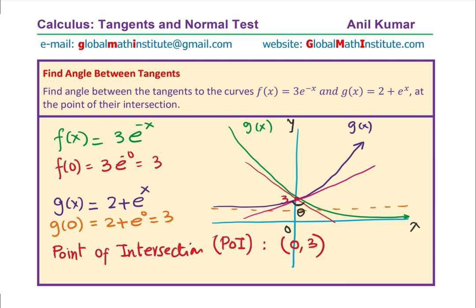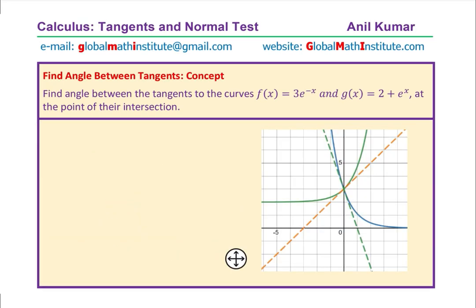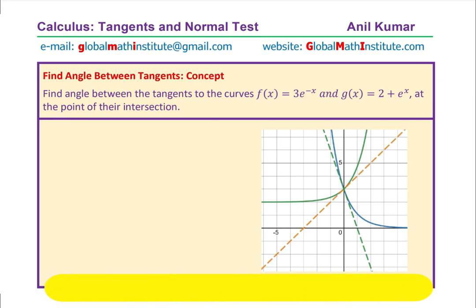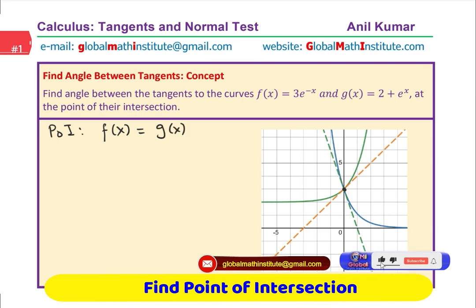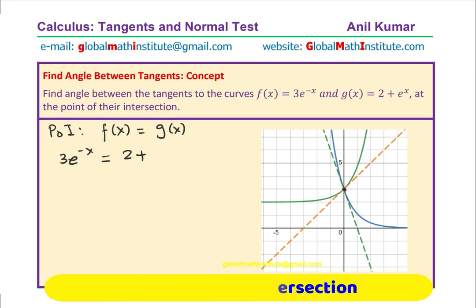Let's begin with our solution. We will find the point of intersection algebraically. To find the point of intersection, f(x) = g(x), meaning 3e^(-x) = 2 + e^x, which is 3/e^x = 2 + e^x. Multiplying both sides by e^x, we get 3 = 2e^x + e^(2x). Bringing all terms to one side: 0 = e^(2x) + 2e^x − 3.